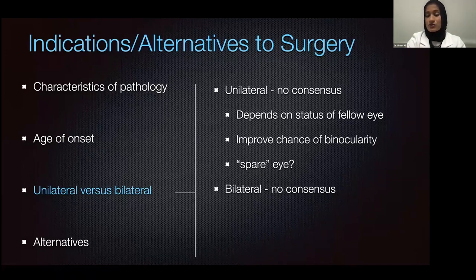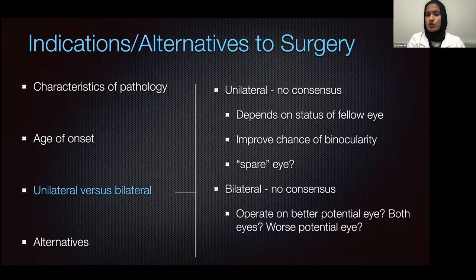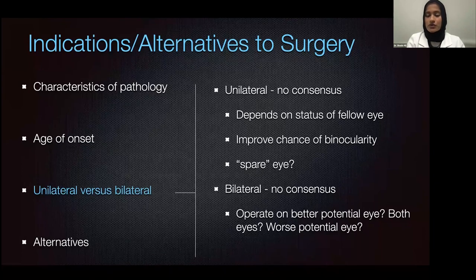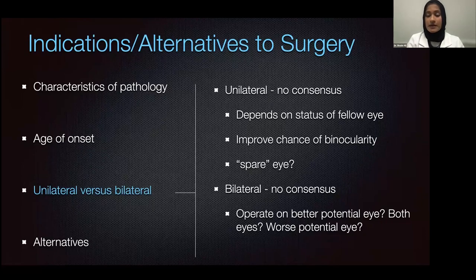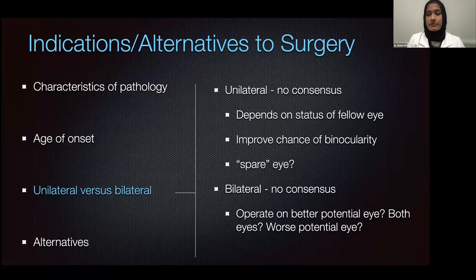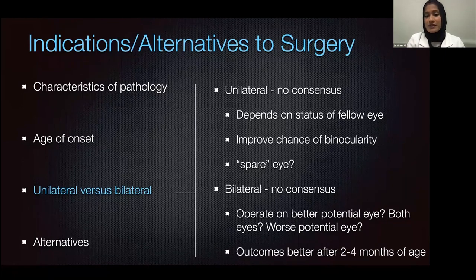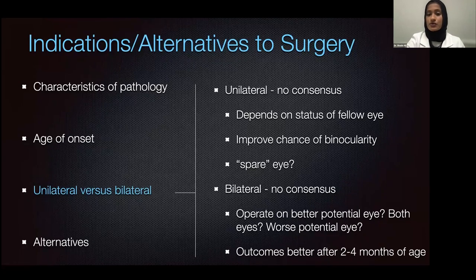Even with bilateral corneal opacities, there is no consensus as to what to do. Should we operate on the better potential eye, both eyes, or the worst potential eye? A lot of corneal specialists will initially operate on the worst potential eye to save the better potential eye from untoward complications. If the initially worse eye becomes the better eye with amblyopia treatment and therapy, you could then consider operating on the initially better eye to improve binocularity. Outcomes tend to be better after two to four months of age, so we typically wait about six to eight weeks before doing surgery for bilateral patients.